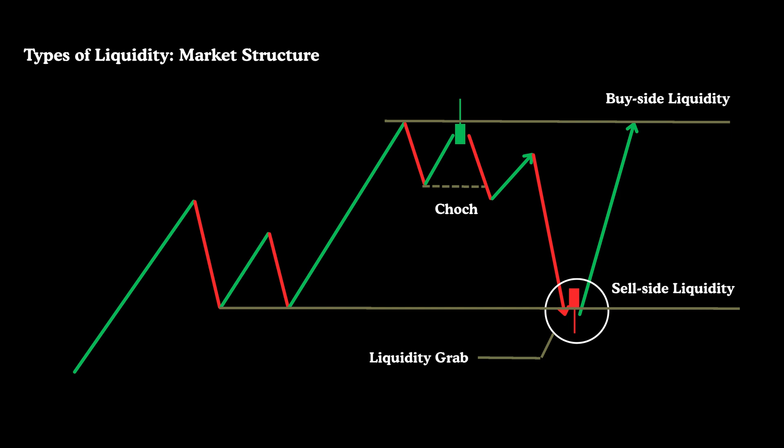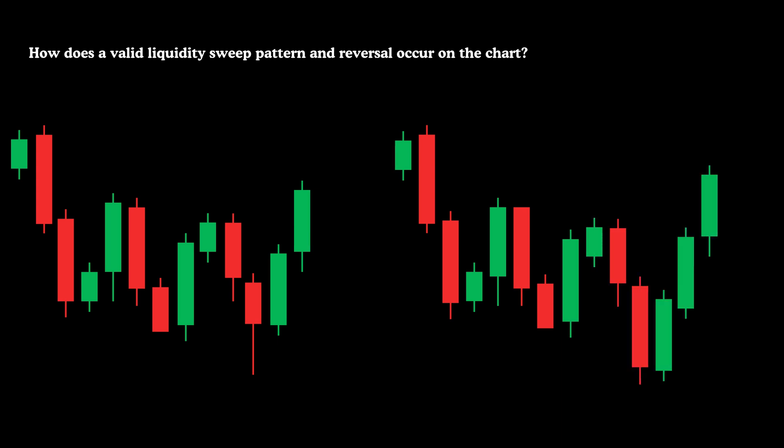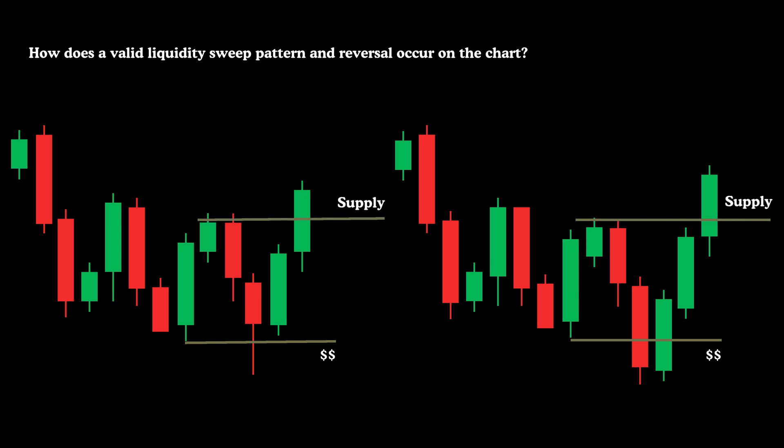You should now have a foundational grasp of how algorithmic price delivery creates movement directed at liquidity areas. Once liquidity sweep patterns form, the market typically shifts direction toward the opposing liquidity zones. In a valid liquidity sweep setup, we're looking for a wick that briefly breaks through a level and then swiftly closes back above the range. Alternatively, a single candlestick close beneath the line followed by the next candle immediately closing back within the previous range signals a potential short-term reversal. By merging the concept of change of character with the liquidity sweep formation, we gain clearer insight into upcoming price moves.